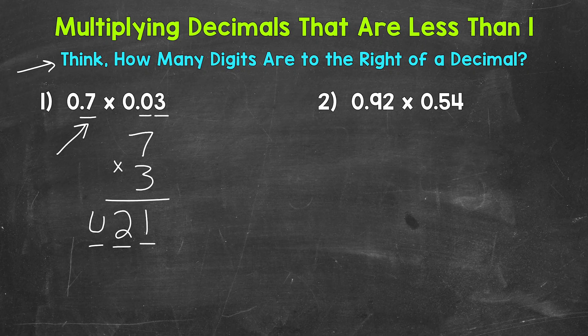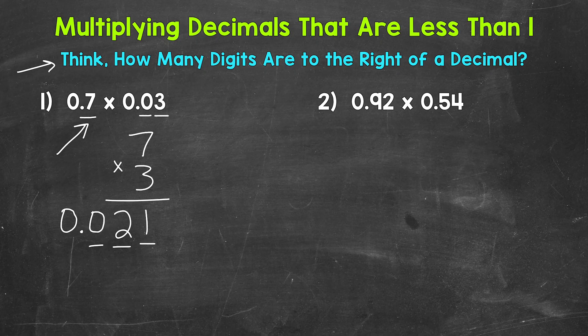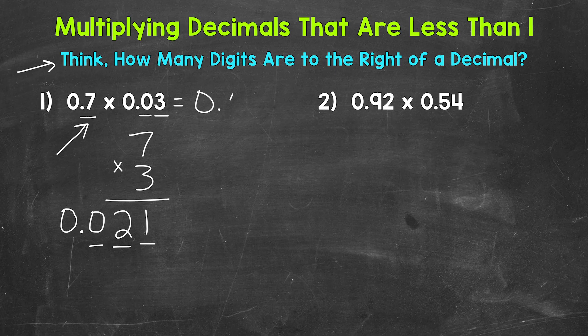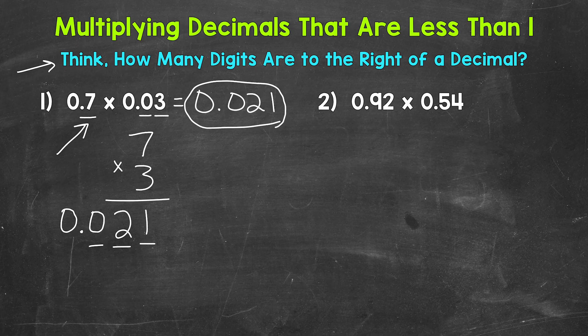We can put a 0 in the tenths place, and then we have our decimal. And I'll put a 0 in the ones place to show that we do not have any whole numbers here. So our final answer is 21 thousandths. Again,